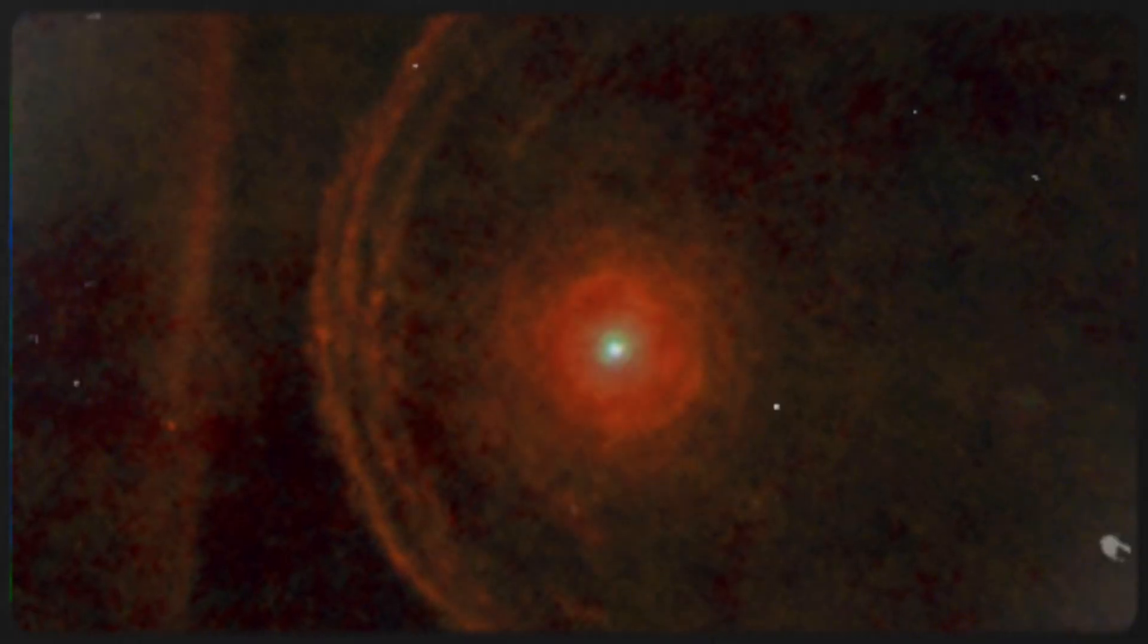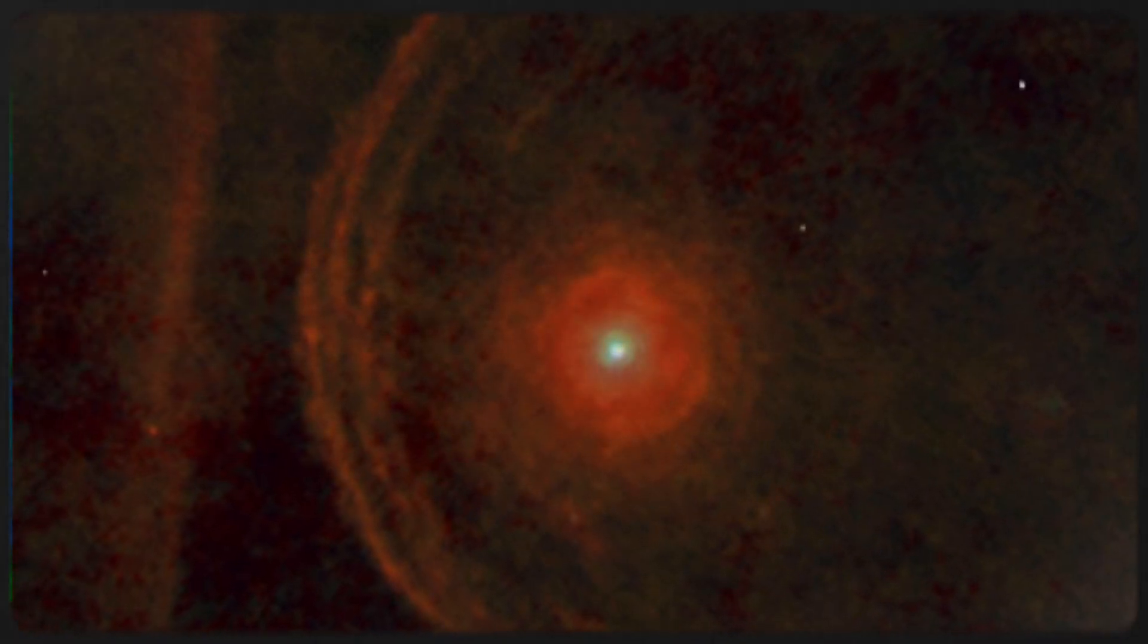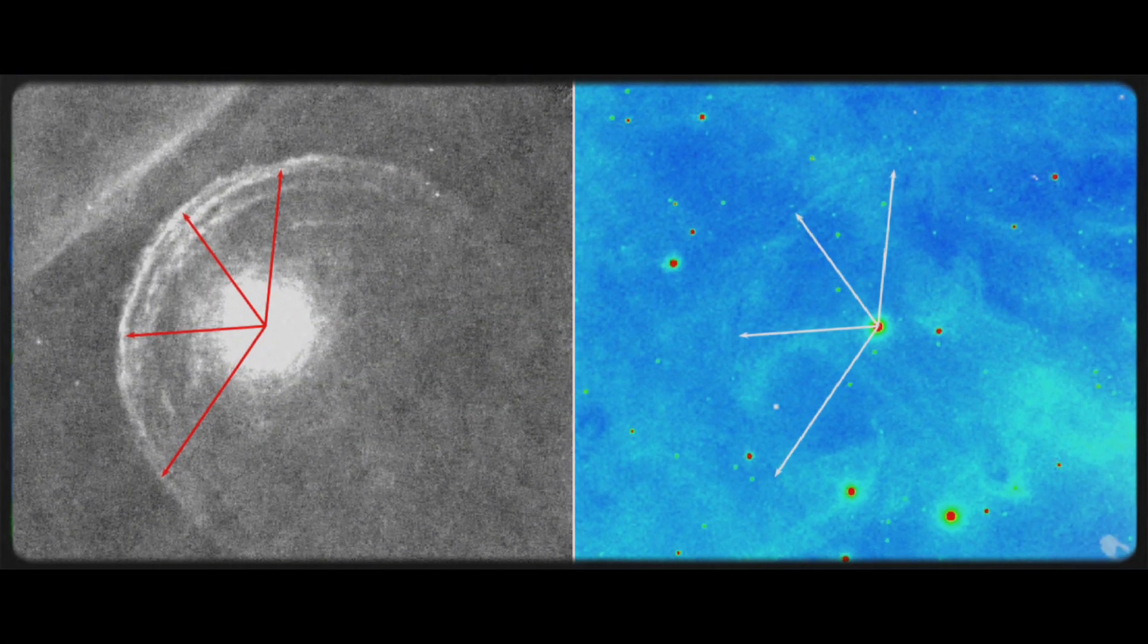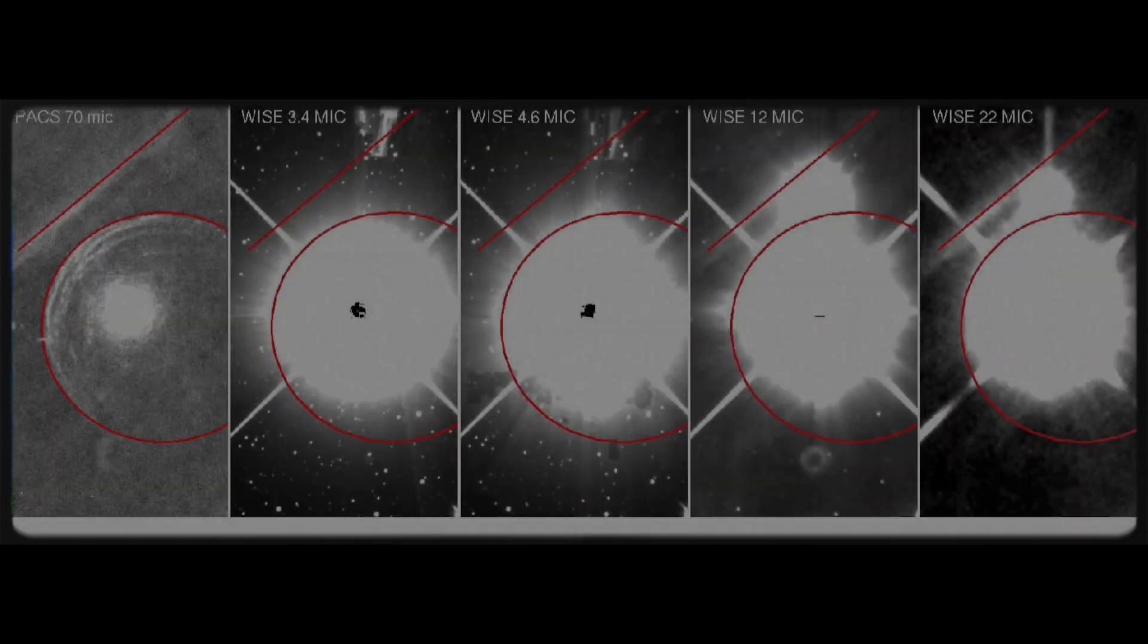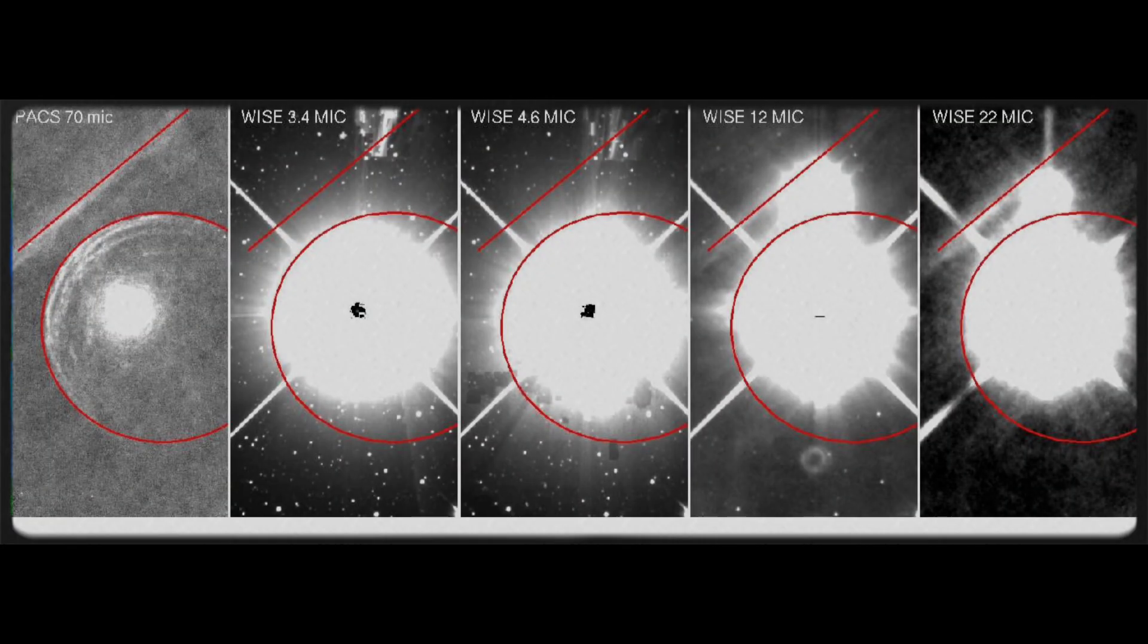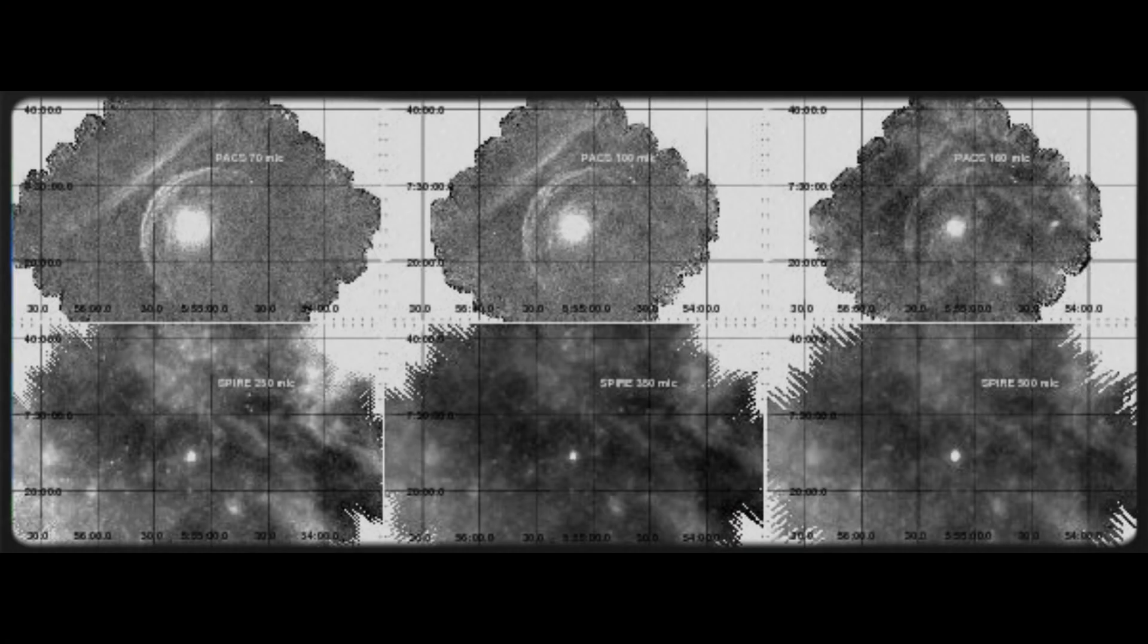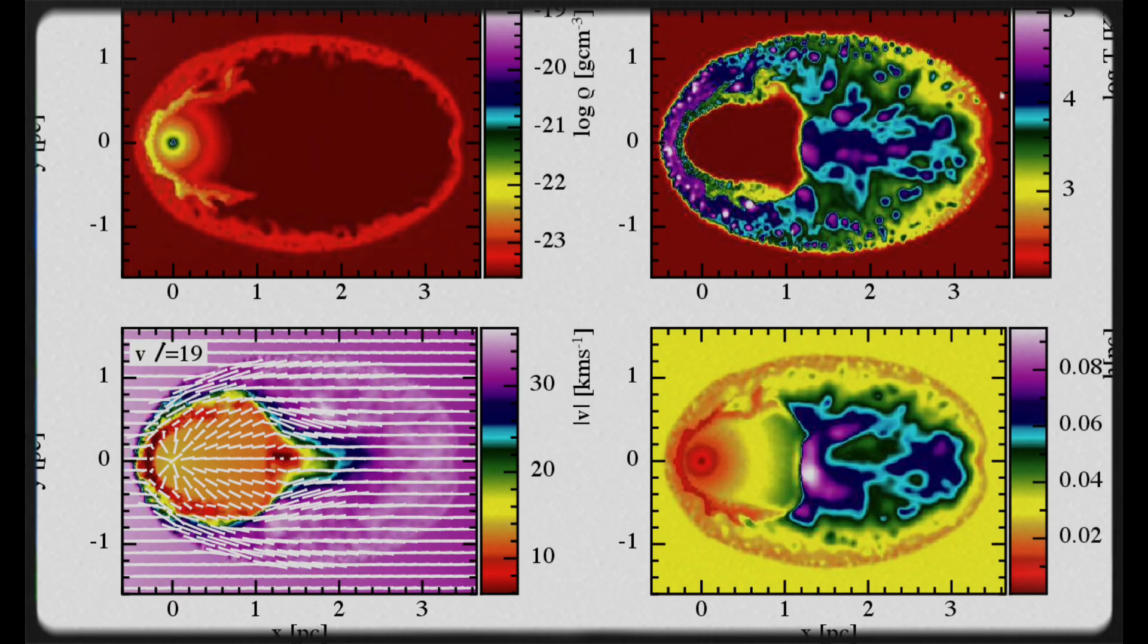Another fascinating piece of the Betelgeuse puzzle is the concept of bow shock. As this massive star races through space at about 67,000 miles per hour relative to the interstellar medium, it creates a bow shock, a wave much like the one formed by a ship's bow cutting through water. This interaction occurs when Betelgeuse's outer layers collide with the surrounding gas and dust, showcasing the star's dynamic activity and its influence on its environment.